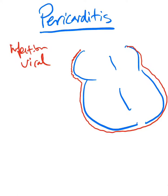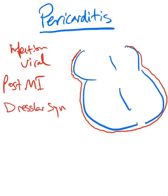Pericarditis can happen after an MI within a few hours, or it can happen about two weeks after an MI. The latter is called Dressler syndrome, and you might see that coming up in your exam. Post-MI pericarditis happens within days; Dressler syndrome happens within two weeks.